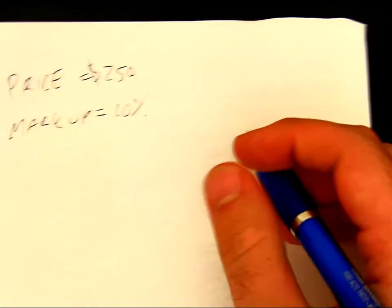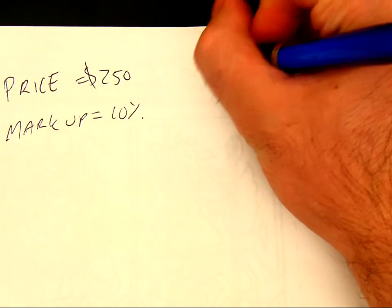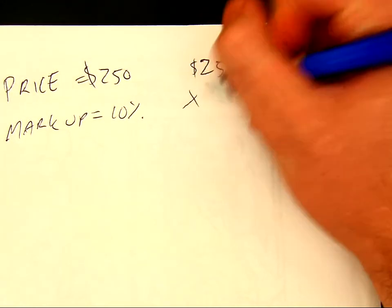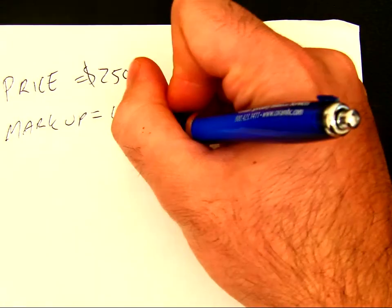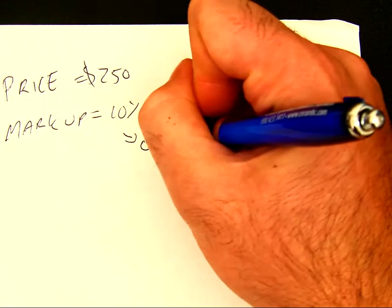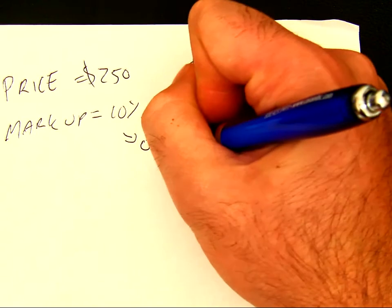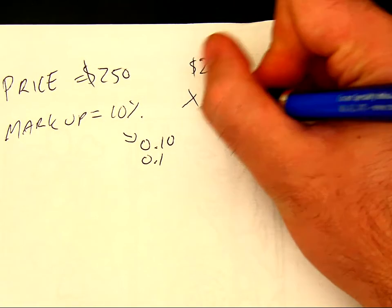Last time we talked about this, we take our base, $250, and multiply it by 10%. 10% can also be written as 0.10 or just 0.1. So multiply it times 0.1.